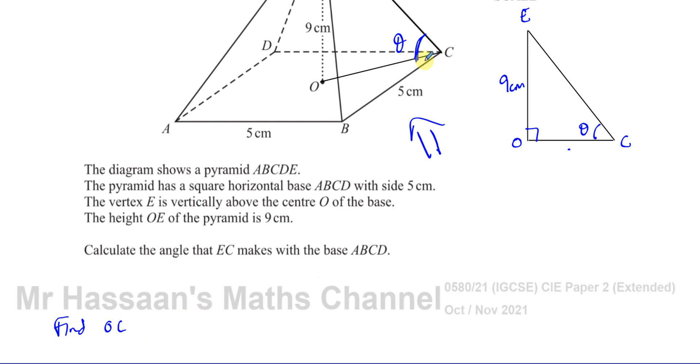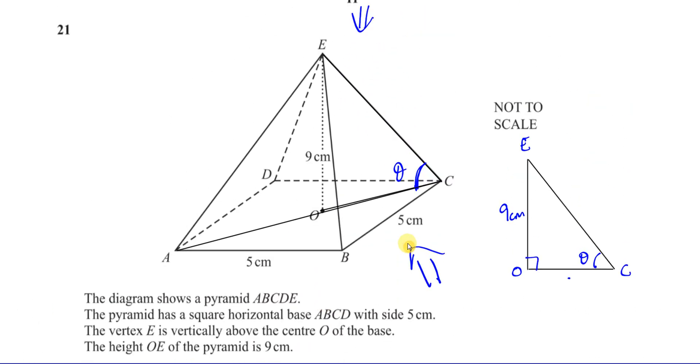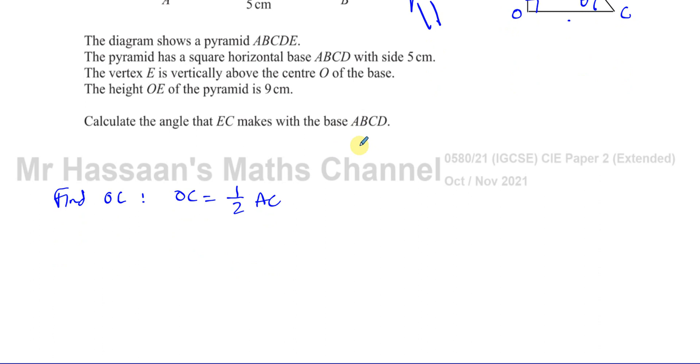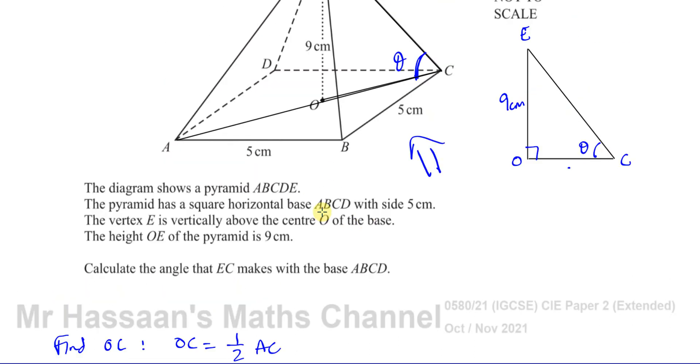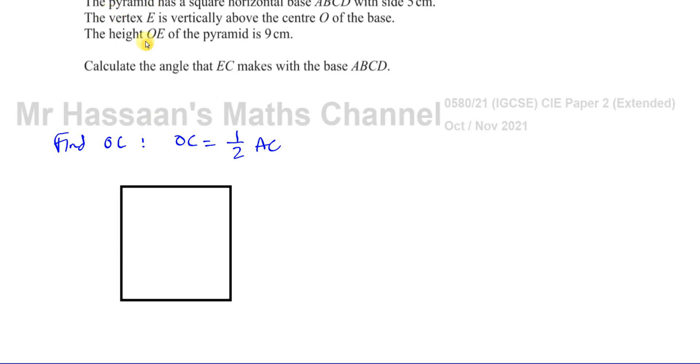Now, I know that OC is equal to half of AC. It's half of the diagonal going all the way across from A to C. That's the diagonal of this square. So if I look at this shape from above or from below, and I see the base ABCD, it will be a square. ABCD will look something like this. If I'm looking from above, that's what I'll see. And each side of this square is 5 centimeters.